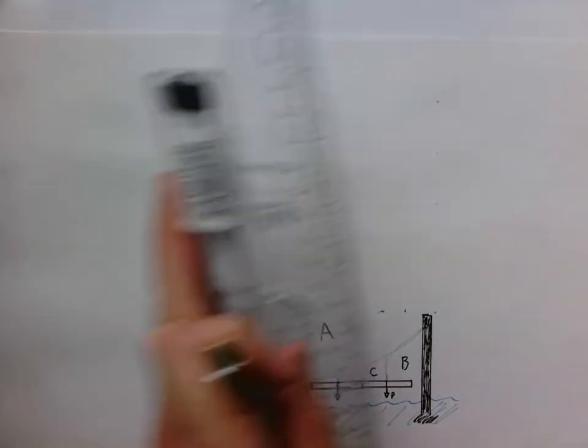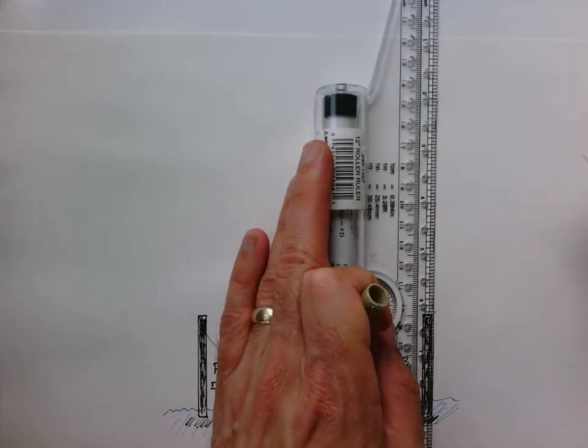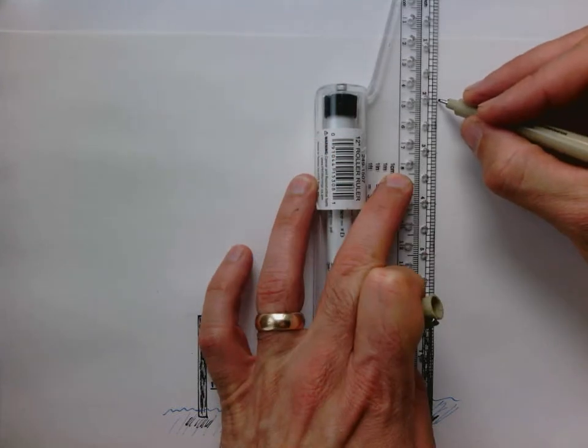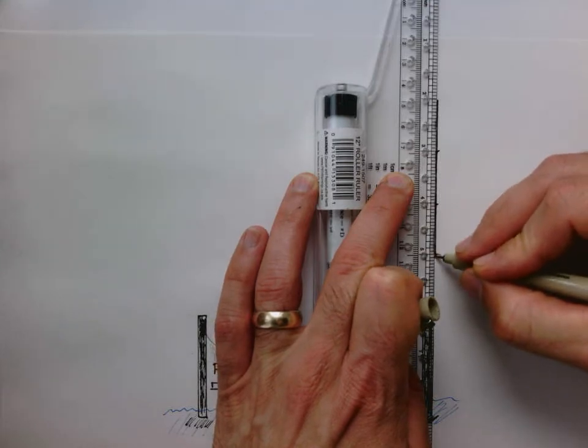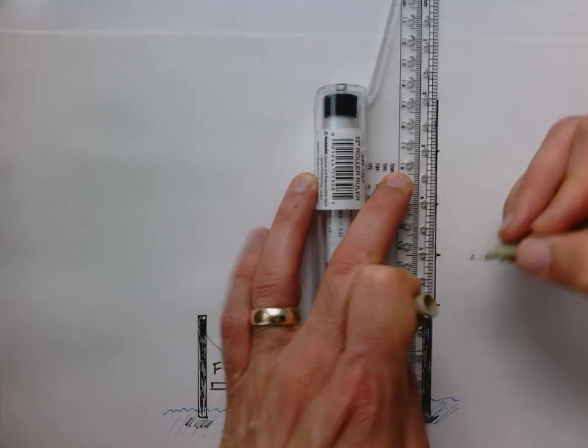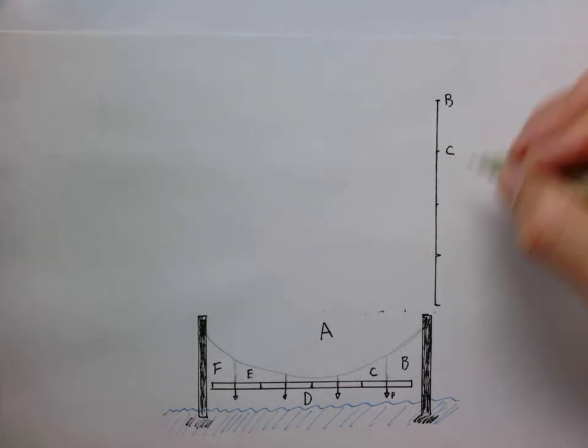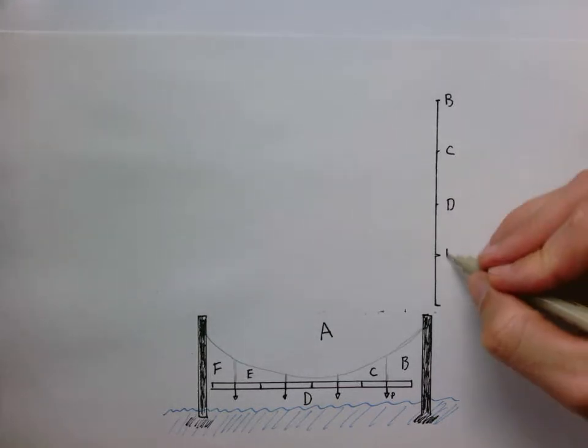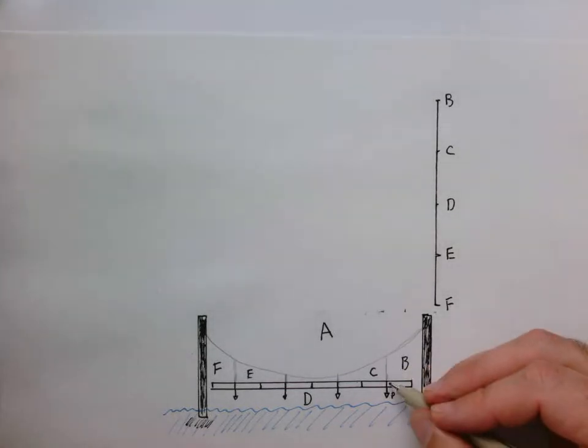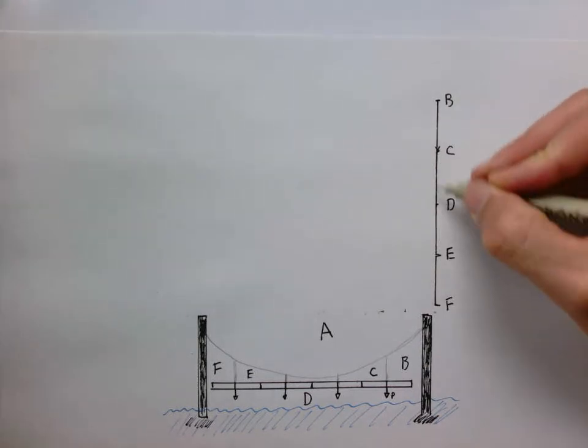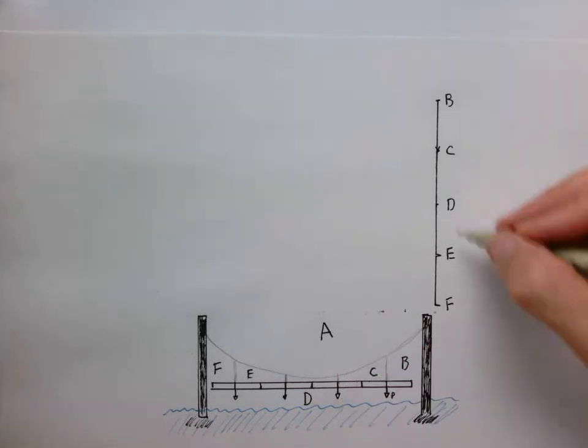So now let me draw my load line. And so remember, the load line is nothing more than this vertical line. And we're going to use one inch as our unit. So there's one, two, three, four. So this is going to label as point B, C, D, E, and F. So B to C is this cable. That's this load here. C to D, this load is this cable here, separating region C to D, and so on.